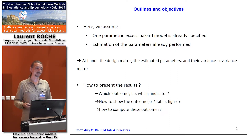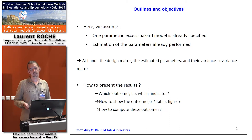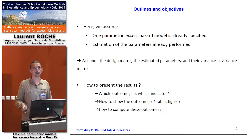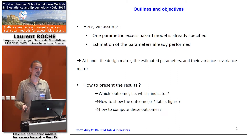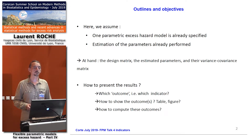The questions that arise are: which outcomes should I show, which indicator, and how to show these outcomes — for example as tables or figures — and also of course how to compute these outcomes.